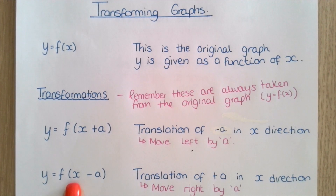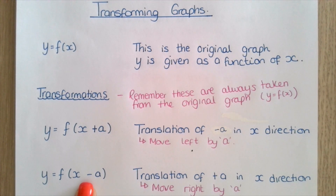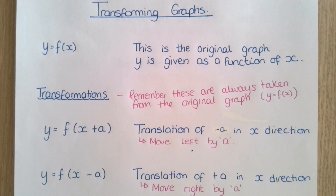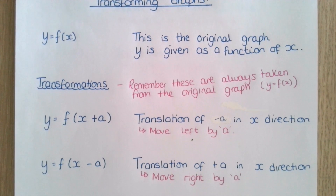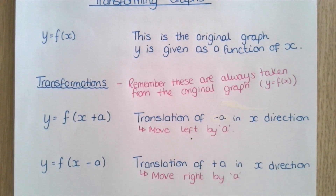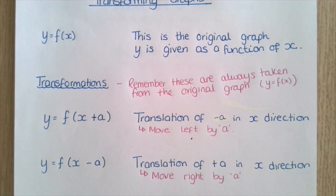Secondly, y equals f of x minus a, where the minus a is inside the brackets also. This is also a translation in the x direction, but this time by positive a. Therefore, what this means is it will move right by whatever your value of a is. You need to add a to the x coordinates given in your graph y equals f of x.